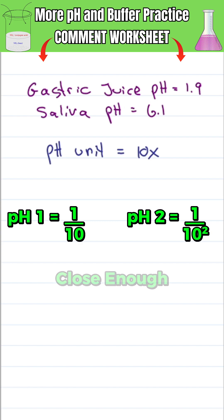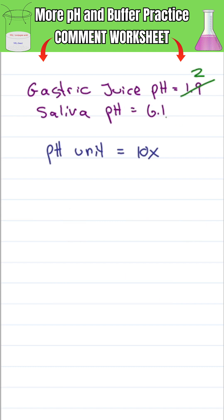Now, without a calculator, close enough is good enough, so we'll estimate 1.9 to 2 and 6.1 to 6, and look at how many units we have between 2 and 6.